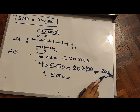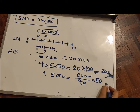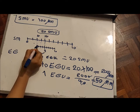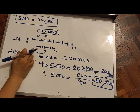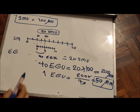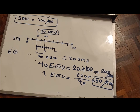If 4 eyepiece graticule units equals 2,000 micrometers, then 1 eyepiece graticule unit equals 2,000 divided by 4, which is 50 micrometers. So each one division on the graticule in the eyepiece equals 50 micrometers. Now that it is calibrated, you can use it to measure cells and organelles under the microscope. I hope you have understood it well — thank you very much.